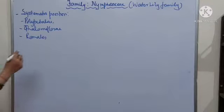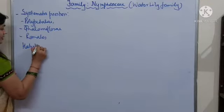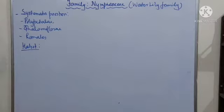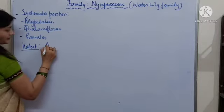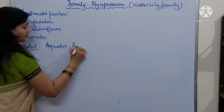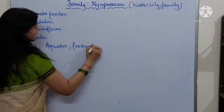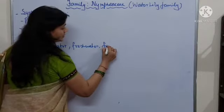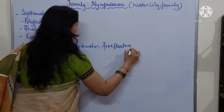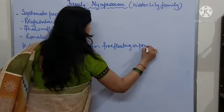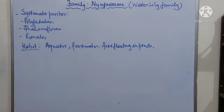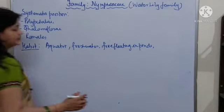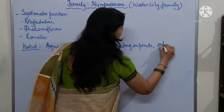First, let's start with habit. They occur in aquatic freshwater bodies. Sometimes they are also found free floating in ponds, having rhizomes.